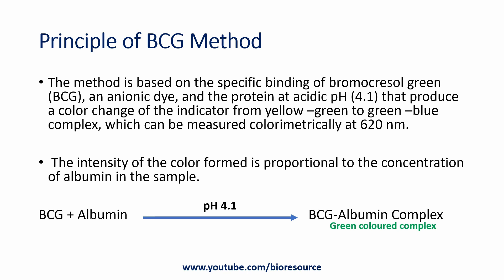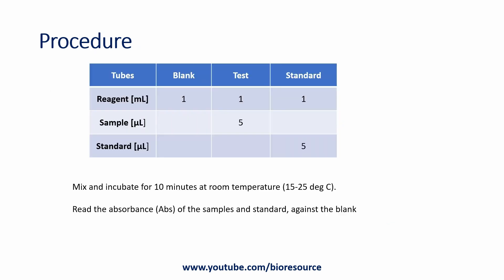The intensity of the color formed is proportional to the concentration of albumin in the sample. By reacting the reagent and the protein, a colored compound is produced, and the intensity of that color is directly proportional to the concentration of albumin in the serum. That is the basic principle of the BCG method.